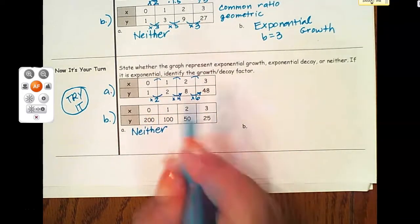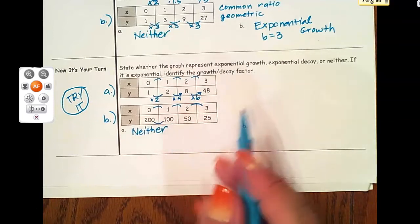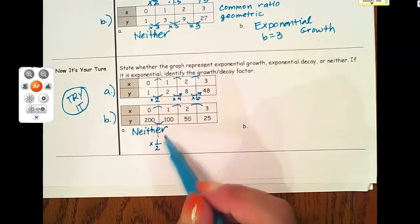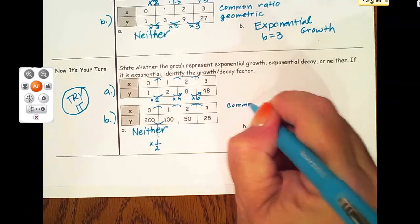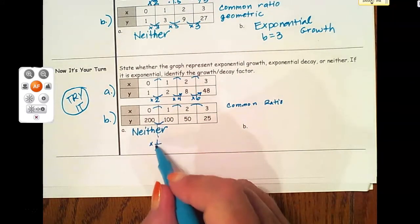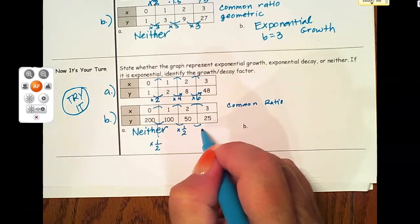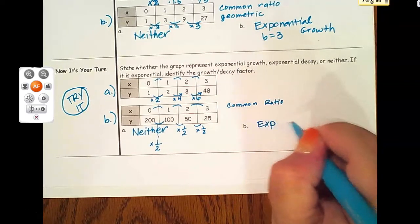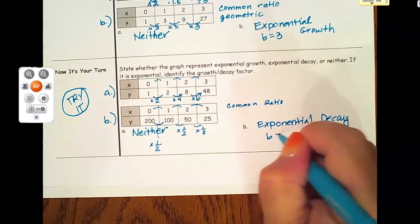Let's take a look at B. The x's are going up by one each time. To go from 200 to 100, a lot of you would probably say you're dividing by two, which is true. But when we're talking about geometric sequences and growth and decay factors, we really want to look at what do we multiply by each time. Dividing by two is the same as multiplying by a half - that's what we want to focus on for our growth or decay factor. From 50 to 25, we multiply by a half. We've got ourselves an exponential decay and our decay factor is a half.